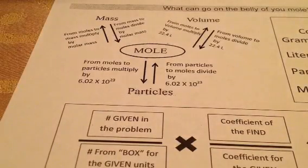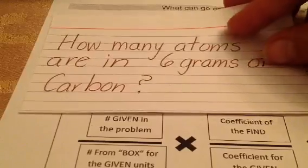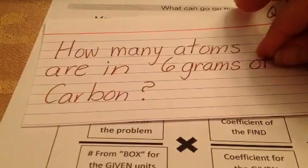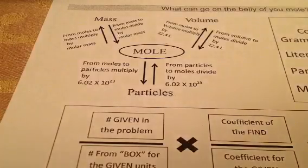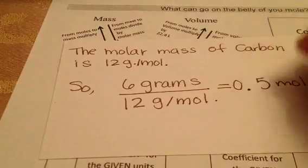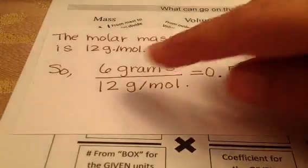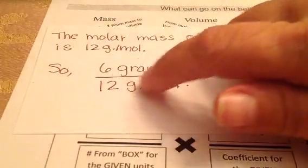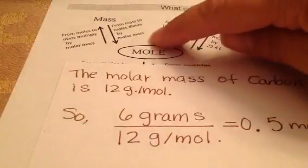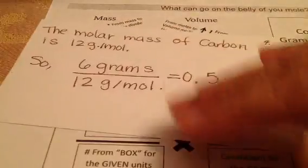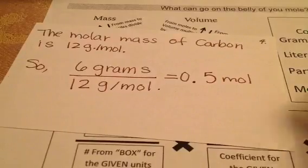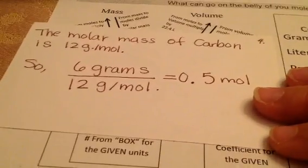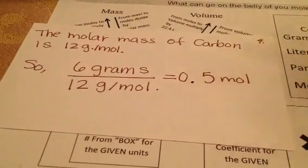Back to our problem: how many atoms are in 6 grams of carbon? First, I have to convert to moles. The molar mass of carbon is 12, so 6 grams divided by 12 — the molar mass off the periodic table — is 0.5 moles.